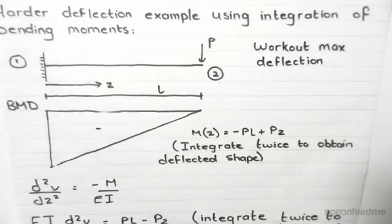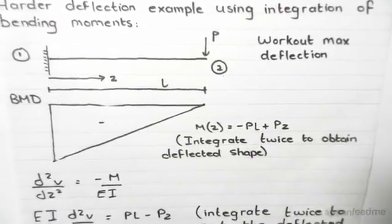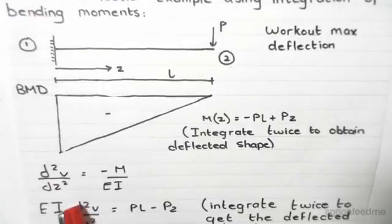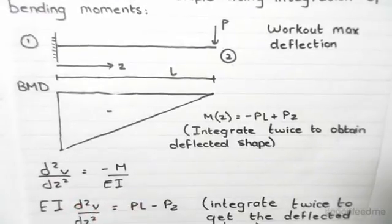We have to integrate the bending moment twice. So d²v/dz² = -M/EI. This is the governing deflection equation.